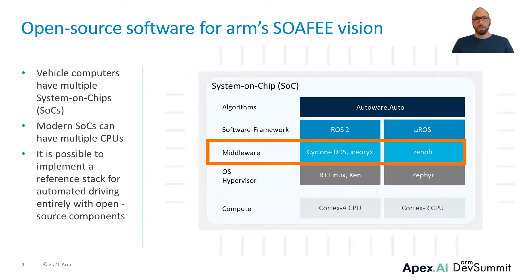Modern ECUs can have multiple systems and chips, and these so-called SoCs can have multiple CPUs. Such an SoC is typically a combination of different ARM CPUs — one with hardware lockstep safety cores, and one with several high-performance cores. It is already possible today to build an automated driving reference stack entirely with open-source components. This is also the vision of the SOFIE initiative recently announced by ARM. In my further presentation, I will focus on the middleware part of this reference stack.